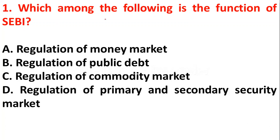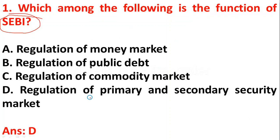The first question: which among the following is the function of SEBI — Securities and Exchange Board of India? Option A: regulation of money market. Option B: regulation of public debt. Option C: regulation of commodity market. Option D: regulation of primary and secondary security market. This is a very easy question. The main function of SEBI is regulation of primary and secondary security market, so option D is the right answer.